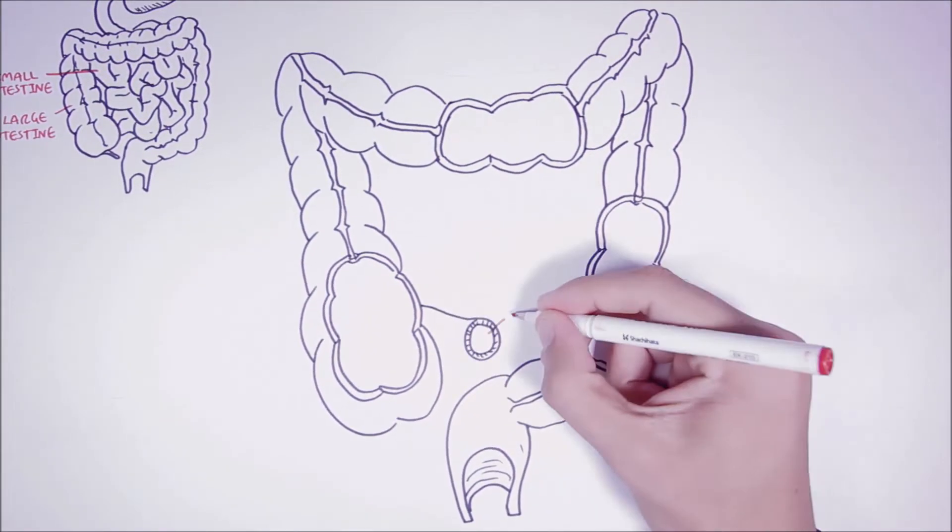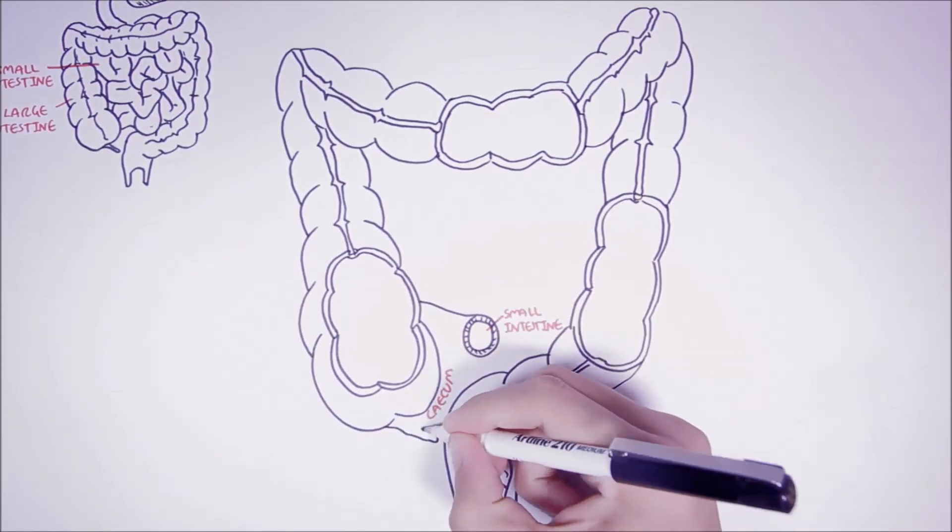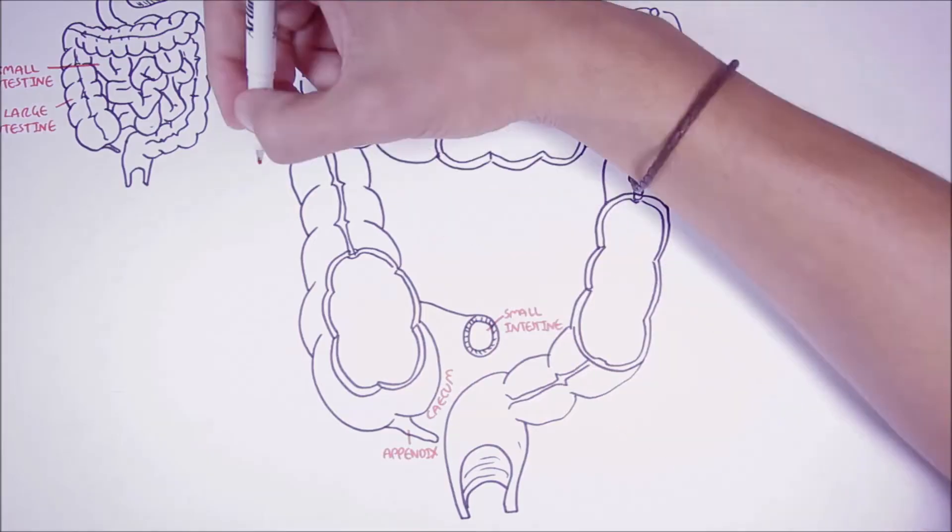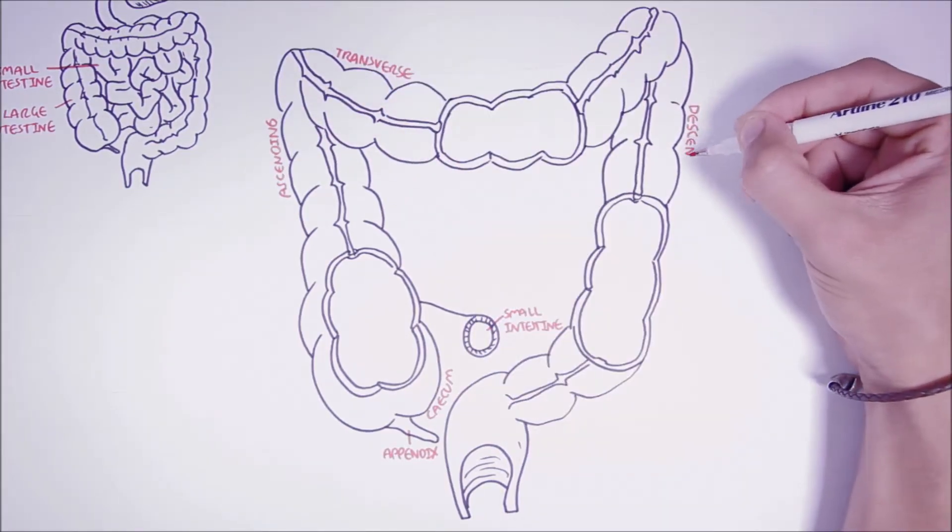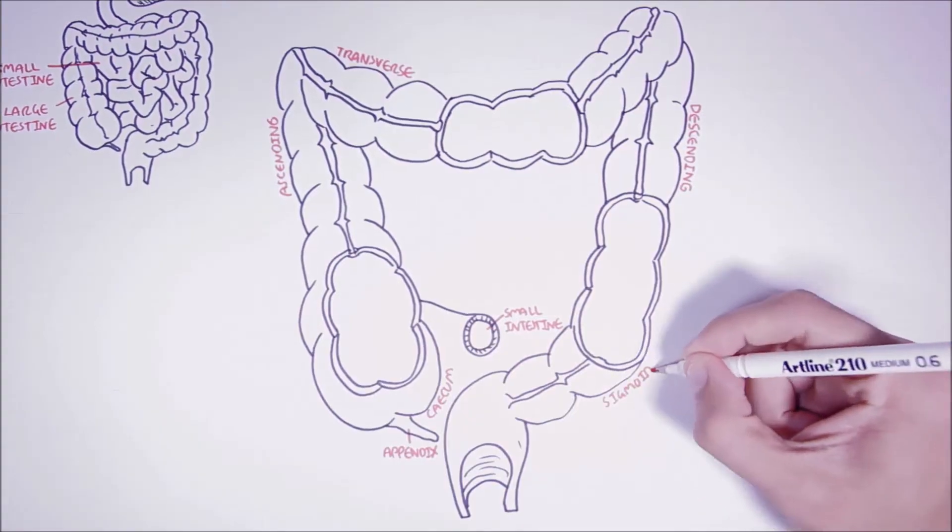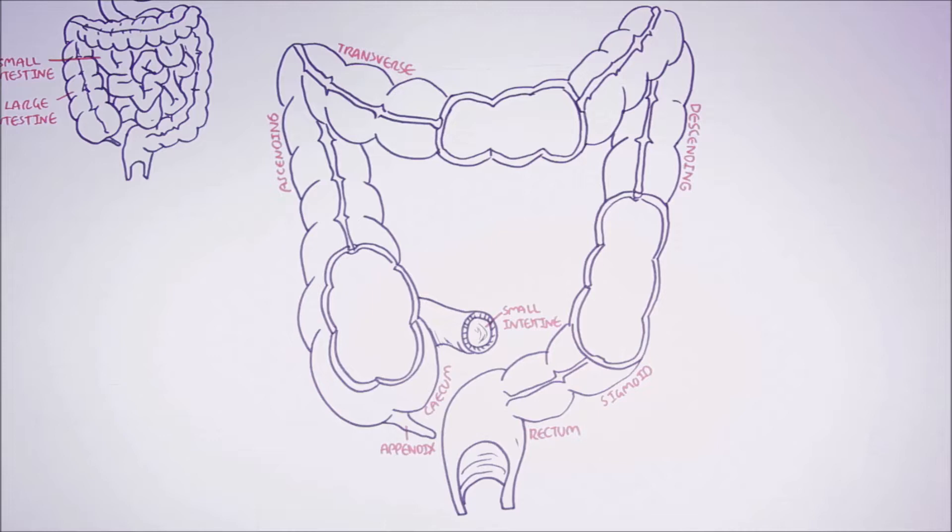So let us recap the regions of the large intestine. Here is a small intestine that joins with the large intestine. The large intestine is made up of the cecum, the ascending colon, the transverse colon, the descending colon, the sigmoid colon, and rectum. We also have the appendix that joins with the cecum.